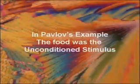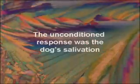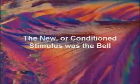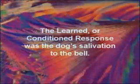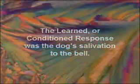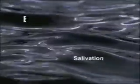In Pavlov's original example, the food was the unconditioned stimulus. The unconditioned response was the dog's salivation. The new or conditioned stimulus was the bell. The learned or conditioned response was the dog's salivation to the bell. The bell was presented, followed by the food, which elicited salivation. After many presentations, the bell eventually elicited salivation.